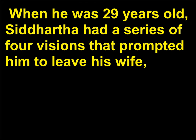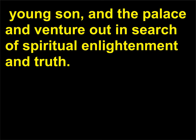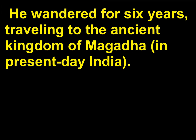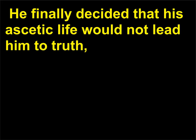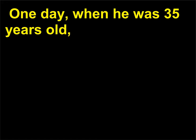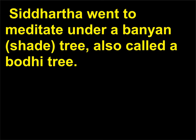When he was 29 years old, Siddhartha had a series of four visions that prompted him to leave his wife, young son, and the palace and venture out in search of spiritual enlightenment and truth. He wandered for six years, traveling to the ancient kingdom of Magadha, in present-day India. During this time he led a life of extreme austerity and even self-torture. He finally decided that his ascetic life would not lead him to truth, and he abandoned his practice of self-denial. One day, when he was 35 years old, Siddhartha went to meditate under a banyan shade tree, also called a Bodhi tree.